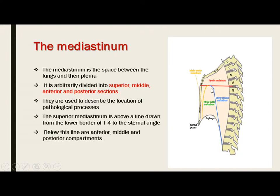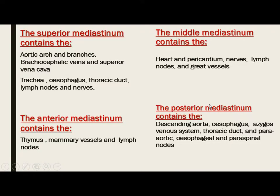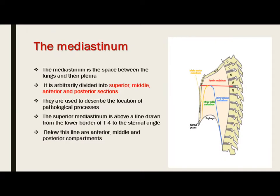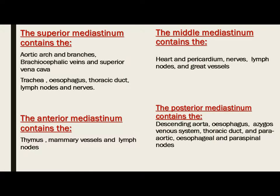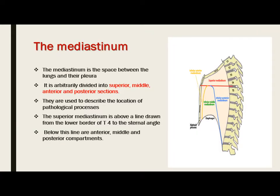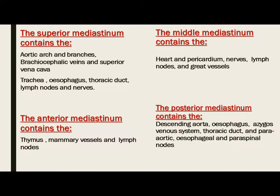The structures located below this line are known as the inferior mediastinum, subdivided into: anterior, referring to structures anterior to the heart and pericardium such as the thymus, mammary vessels and lymph nodes; the middle mediastinum, referring to structures within the pericardium such as the heart, nerves, lymph nodes and great vessels; and the posterior mediastinum, referring to structures posterior to the pericardium, including the descending aorta, esophagus, azygous venous system, thoracic duct, and para-aortic, esophageal and paraspinal nodes. The mediastinum contains appreciable amounts of fat, lymph nodes, and great vessels, which is why it is very well visualized on CT and MRI.